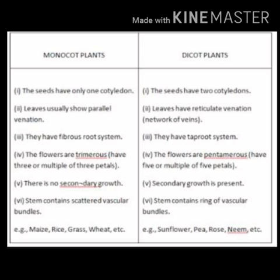For example, monocot examples: maize, rice, etc. And dicot examples: sunflower, pea, roses, neem, etc.